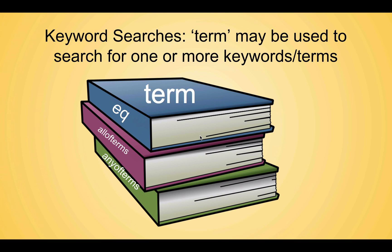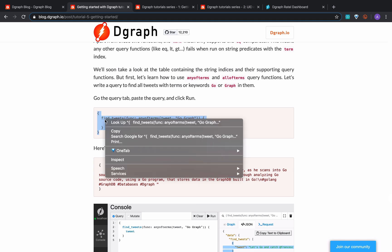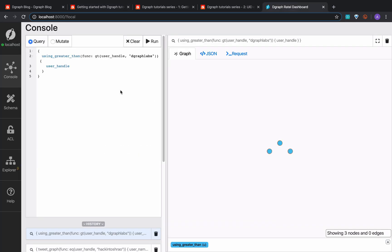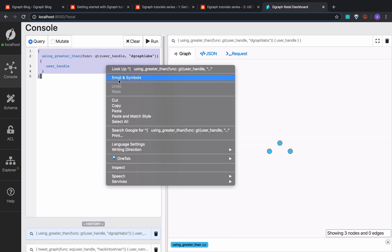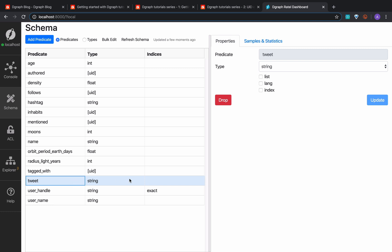A keyword-based search is a useful way to find relevant info. Are we able to search for tweets based on one or more keywords related to our interest? Yes, we can — using the term index. The term index lets you search string predicates based on one or more keywords; these keywords are called terms. To search tweets with specific keywords or terms, we need to first set the term index on the tweets. Adding the term index is similar to adding any other string index. Term has two built-in functions: allofterms and anyofterms. Term also supports the eq comparator but not the other comparators.